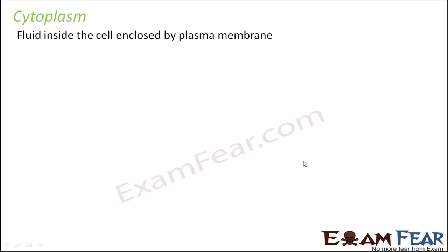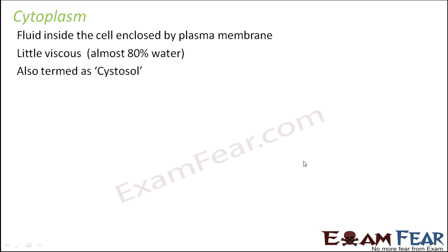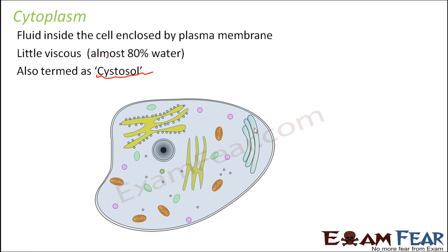This fluid fills the entire space inside the cell. It is a little viscous; however, it has almost 80 percent water. Viscosity refers to stickiness — for example, honey has very high viscosity, which is why it is thick and sticky. Cytoplasm is also viscous but not that viscous — 80 percent is water and the remaining 20 percent accounts for its viscosity. It is also known as cytosol, and these two terms are often used interchangeably.